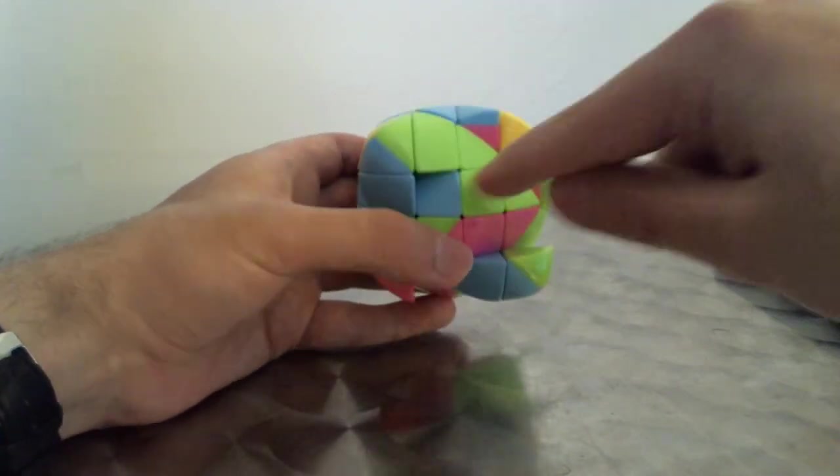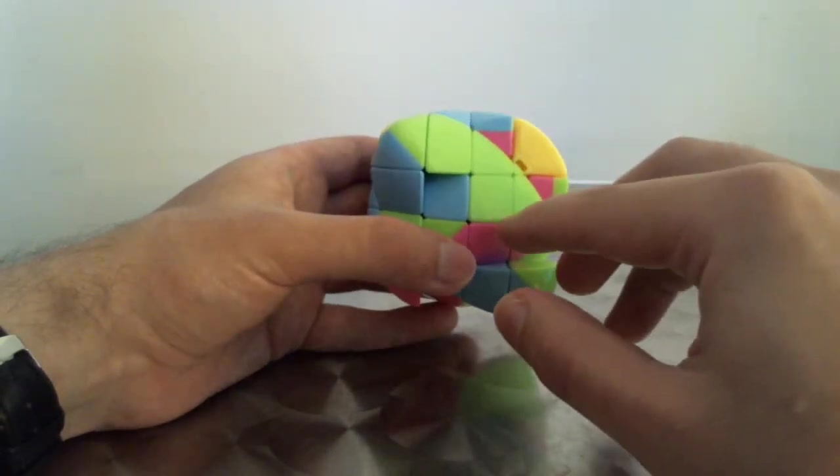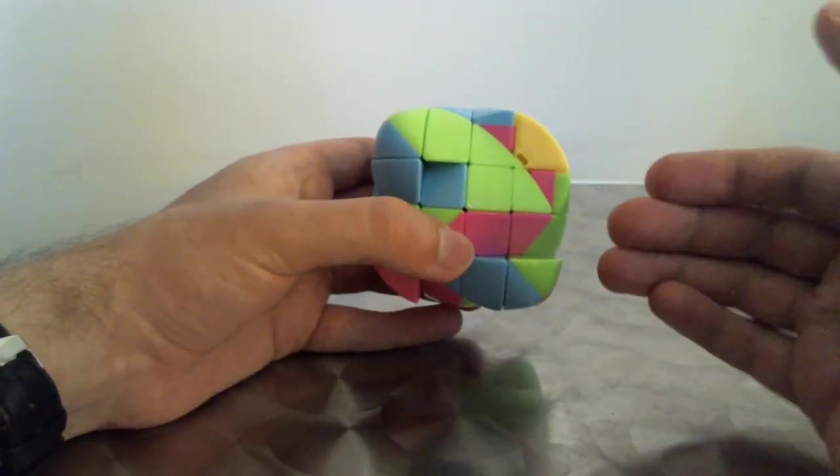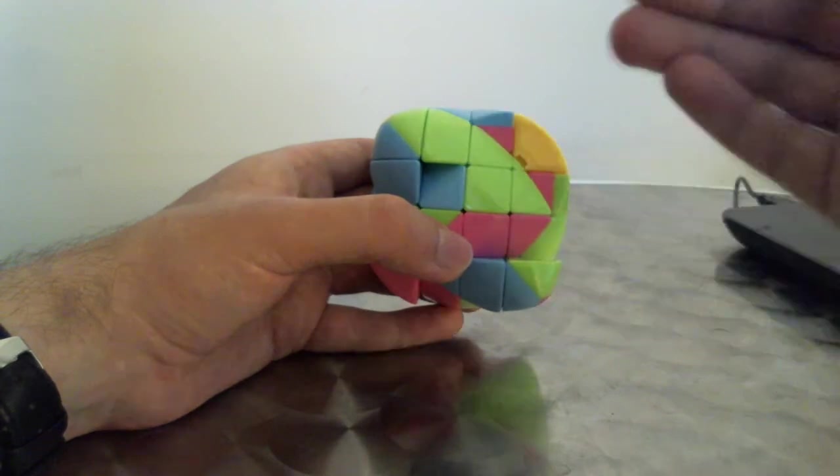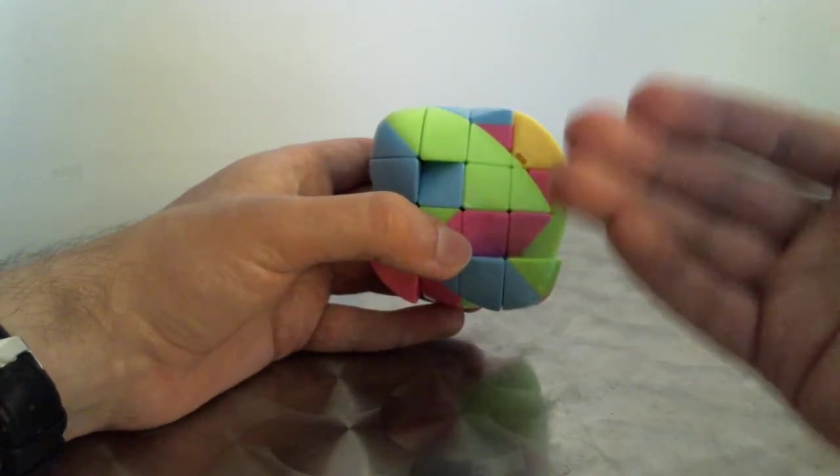This will allow us to three-cycle these three pieces. From this position we do the same algorithm that I did before, which is going to recycle them, and we just then have to remember to undo the two setup moves that we just did.